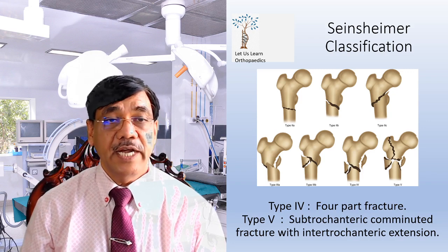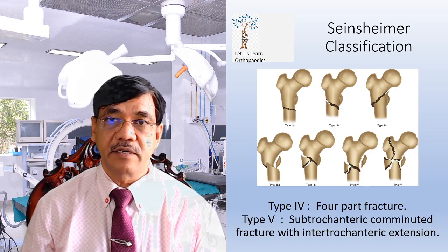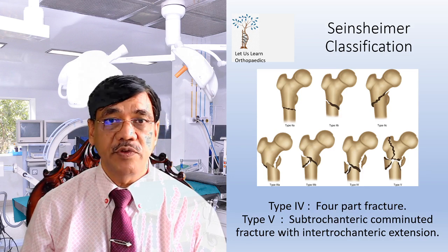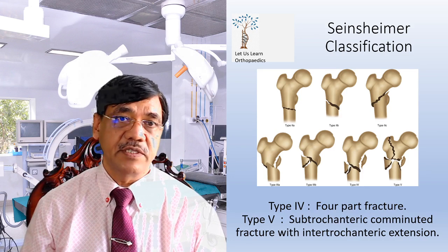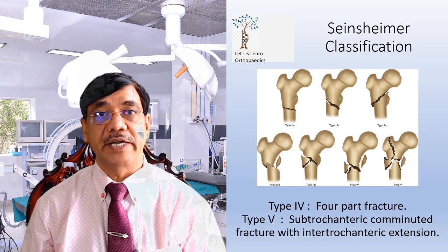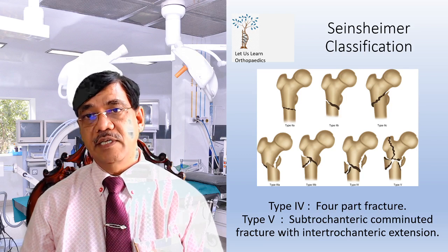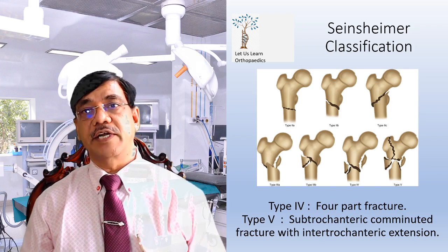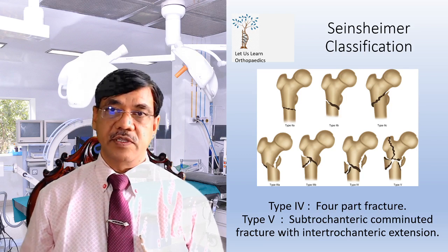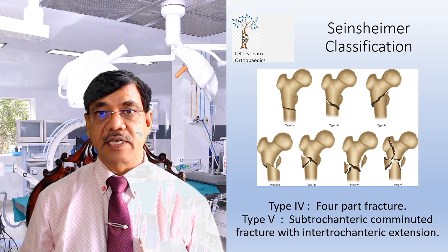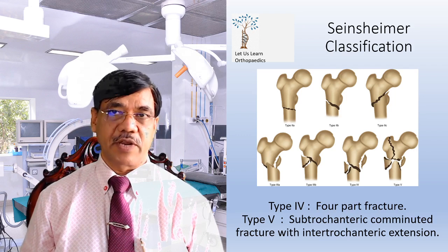Type 5 is the subtrochanteric comminuted fracture with intertrochanteric extension. Whenever there is an intertrochanteric extension in the subtrochanteric fracture, we call it a Type 5 fracture.